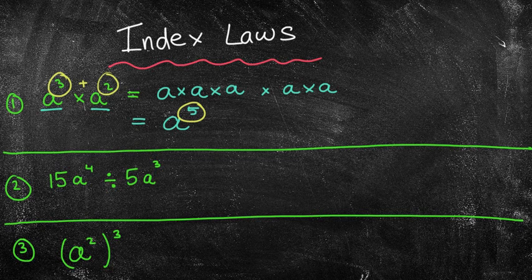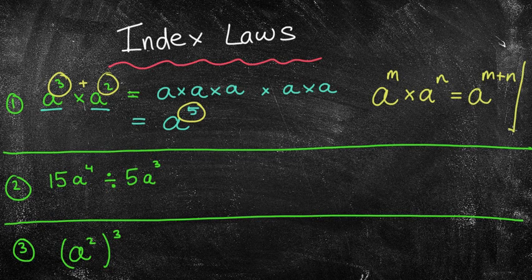And that's part of our rule. If the bases are the same, for example we have a to the power of m times a to the power of n, what we simply do is add the indices together. And that's one of our first index laws.